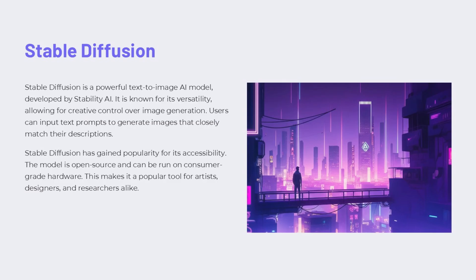Stable Diffusion is a powerful AI model that can generate images from text prompts, developed by Stability AI and known for its versatility and creative control. It is open-source and can run on consumer hardware, making it accessible to many users. Artists, designers, and researchers are using Stable Diffusion to create a wide range of images. The example on this slide depicts a futuristic, cyberpunk-style city skyline at night with neon lights, showcasing Stable Diffusion's ability to generate detailed, imaginative images from text prompts.